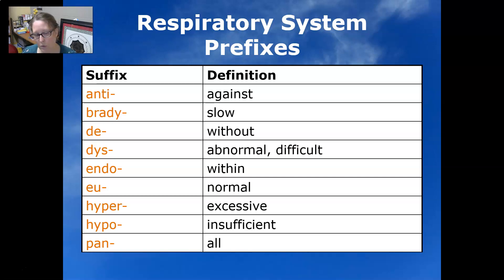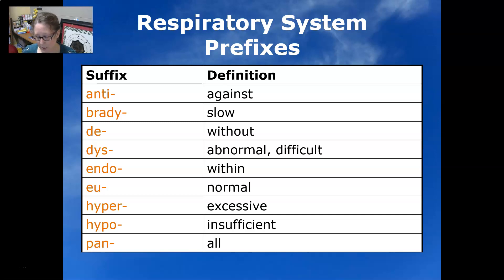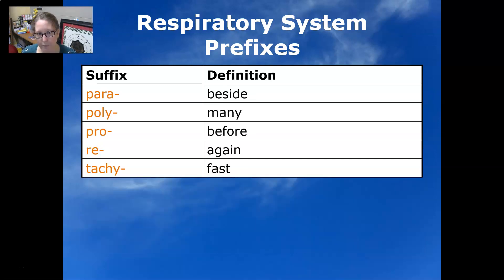Eu is normal. Hyper is excessive, and can also mean high. Hypo is insufficient, and can also mean low. Pan means all. Para means beside. Poly is many. Pro is before. Re is again. Tachy is fast.